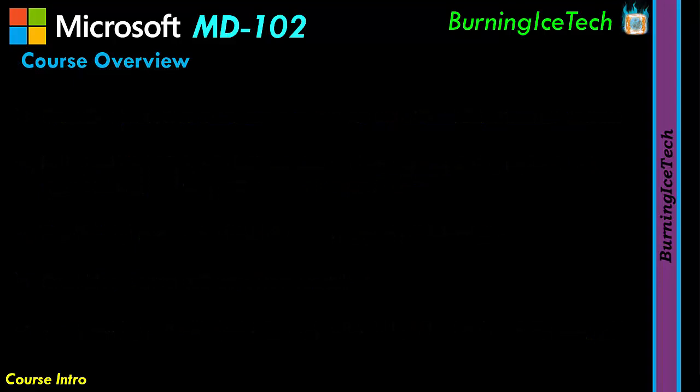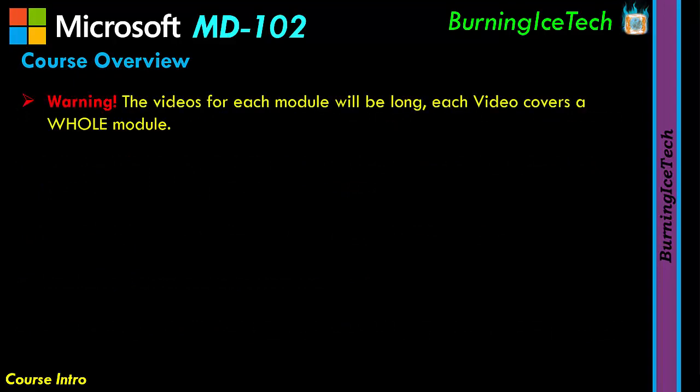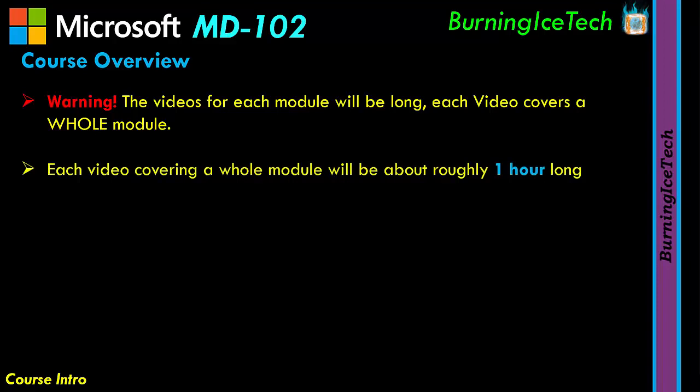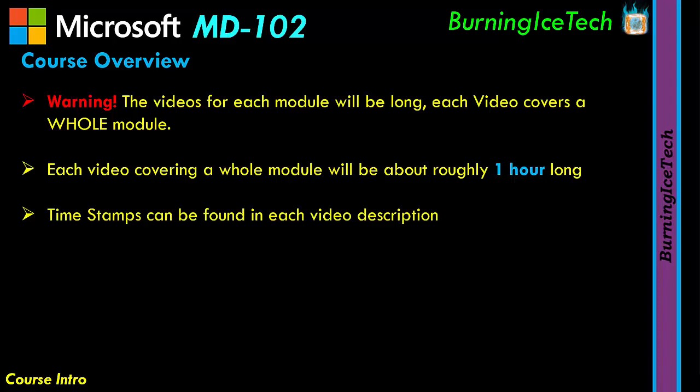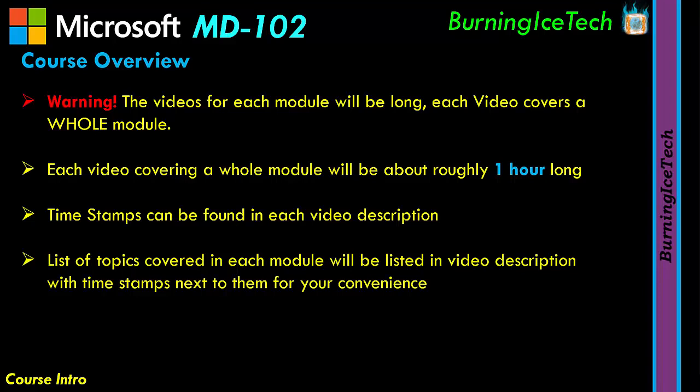There is a bit of a warning here: since we're covering a whole module in a video, these videos will be long. Each video will cover a whole module, so that means approximately about one hour long. Some might be shorter — maybe 30 minutes, 45 minutes — some might be an hour and a half. That's why I've given you timestamps. You can find those in each video's description, from module one all the way to module eight, to make your life a little bit easier. There will be a list of topics covered in each module along with timestamps, so if you're looking for a specific topic, it's going to be very easy to find.